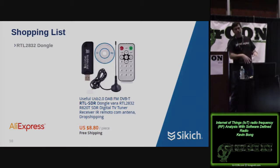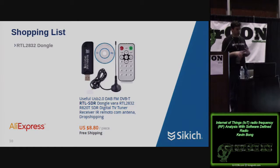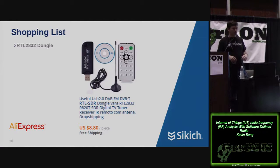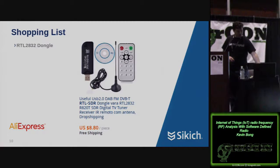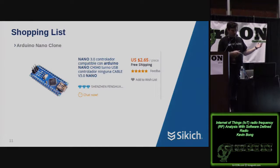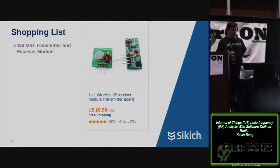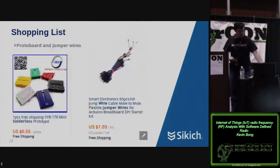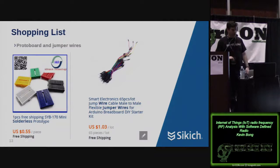One of my big goals is to do things cheaply, because when you get to hardware hacking, sometimes you can break things. Here was my shopping list. If you're not familiar with AliExpress, it's like the Amazon of China and the prices are disturbingly cheap. For $8.80 with free shipping, you get the software-defined radio we're using here. An Arduino Nano clone was under $3 shipped. The transmitter and receiver modules were about a buck. The only other parts are a protoboard and some jumper wires. Under $15, you can duplicate what I've done here — skip a lunch at a restaurant and have some fun and learn something.